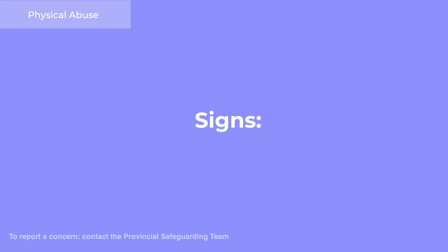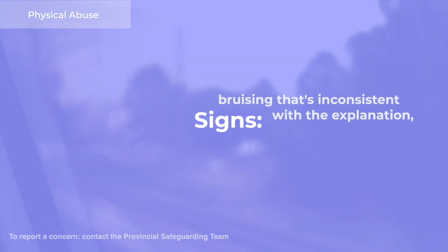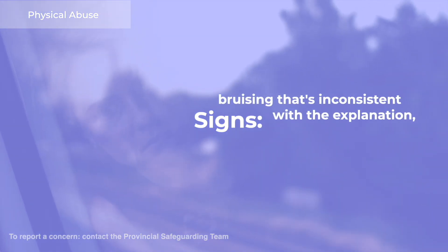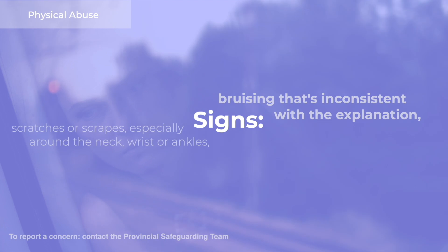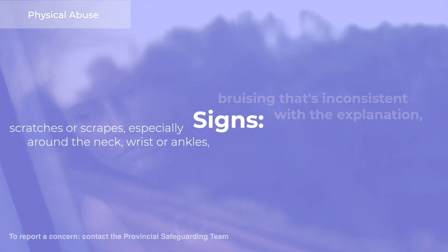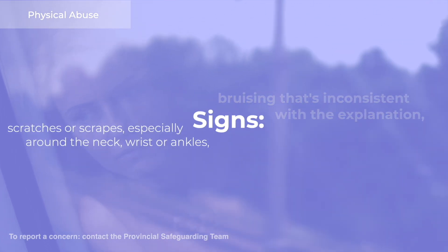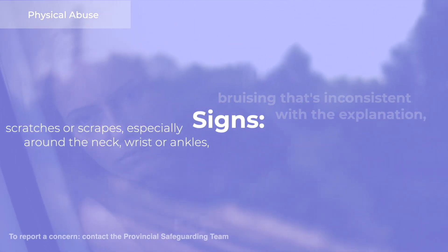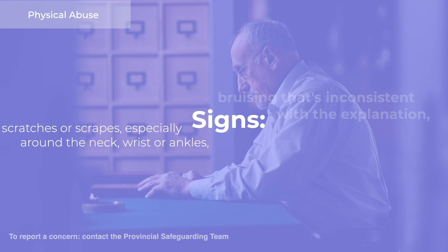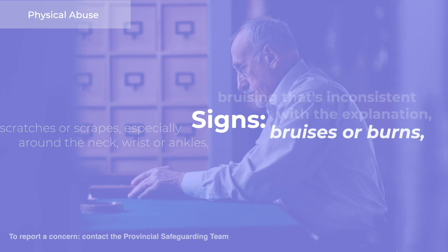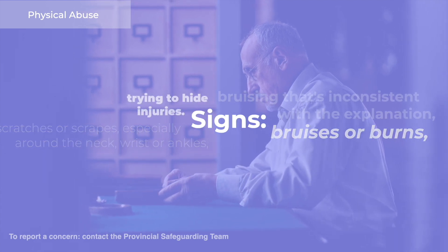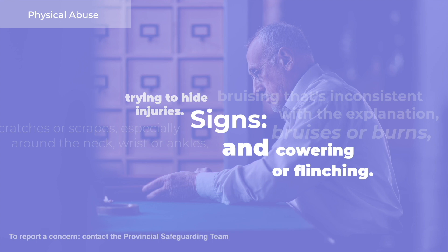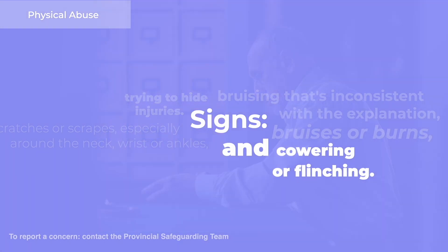Signs and symptoms of physical abuse can include bruising that's inconsistent with the explanation, scratches or scrapes especially around the neck, wrist or ankles, bruises or burns, trying to hide injuries, and cowering or flinching.